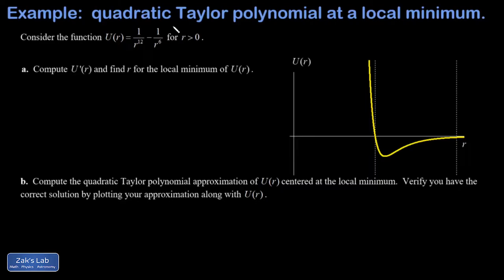In this video we're computing a quadratic Taylor polynomial located at a local minimum of a function. This is actually a really common application of Taylor polynomials — it has a lot of application in physics to locate the minimum of a potential energy function and then approximate it with a quadratic function, in other words an upright parabola that matches the curvature at that local minimum. The function we're looking at is a simplified version of what's called the Lennard-Jones potential, with numerator constants set to one to keep things efficient.